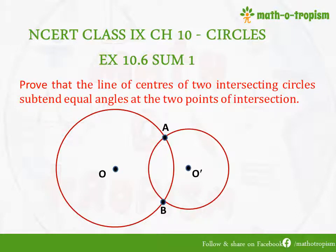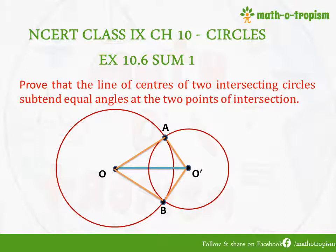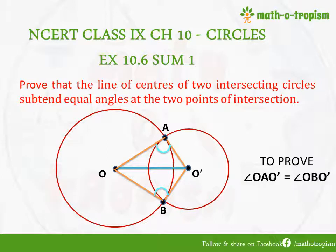The line of centers means we are going to join O and O'. The angles subtended by that line at the points of intersection are angle OAO' and angle OBO' — we need to prove that these two angles are equal. So we join OA, AO', OB, and O'B.